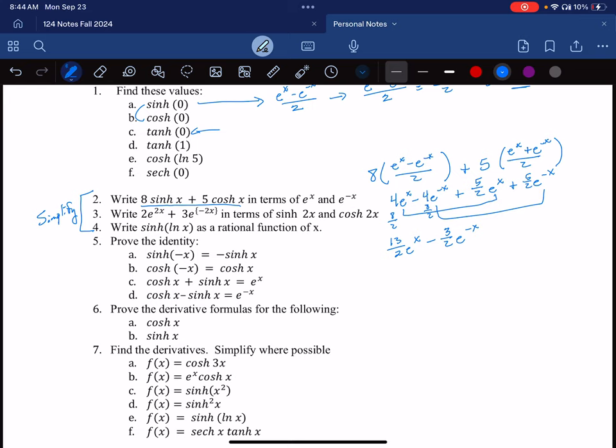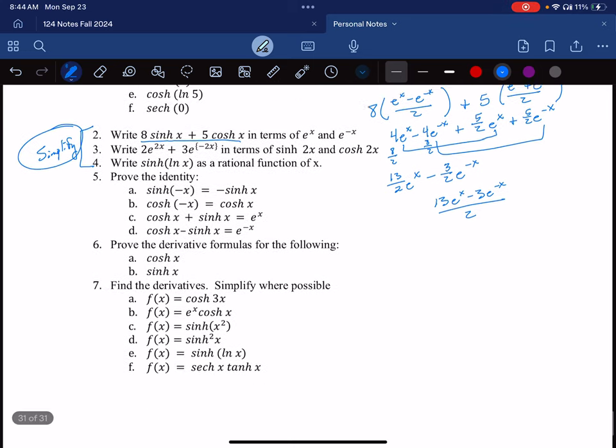And again, I could write this over a common denominator, 13 e to the x minus 3 e to the minus x all over two. Okay. Check my work. I have a little brain fog, so just check, and this should be good. But do simplify these for two, three, four, and five.